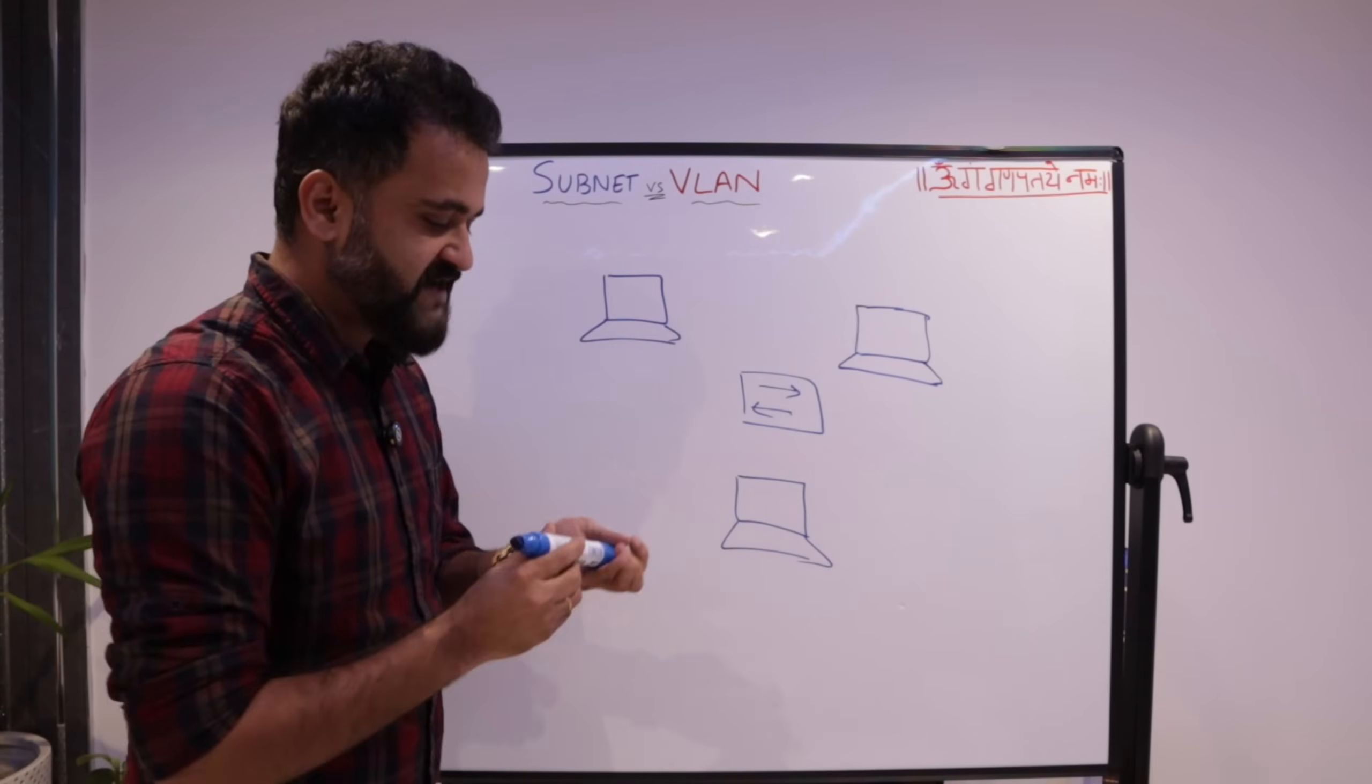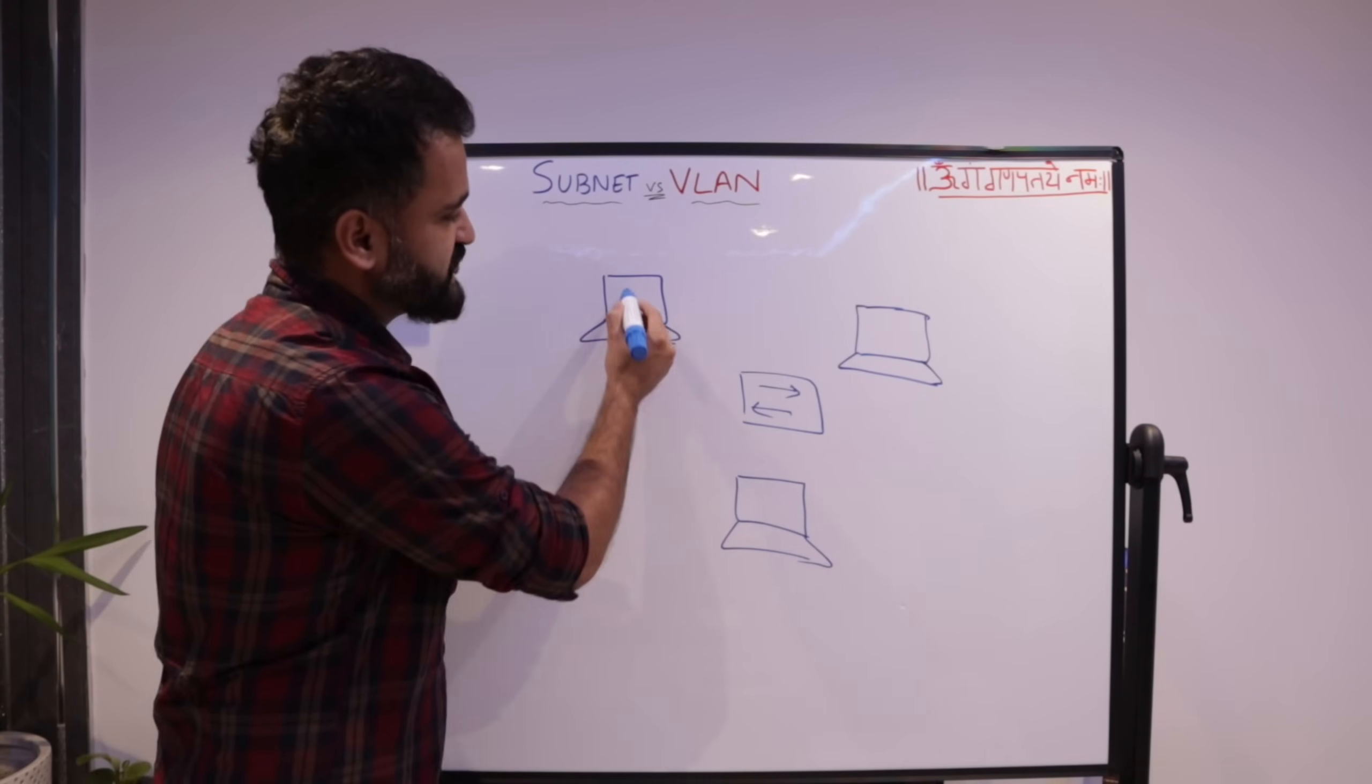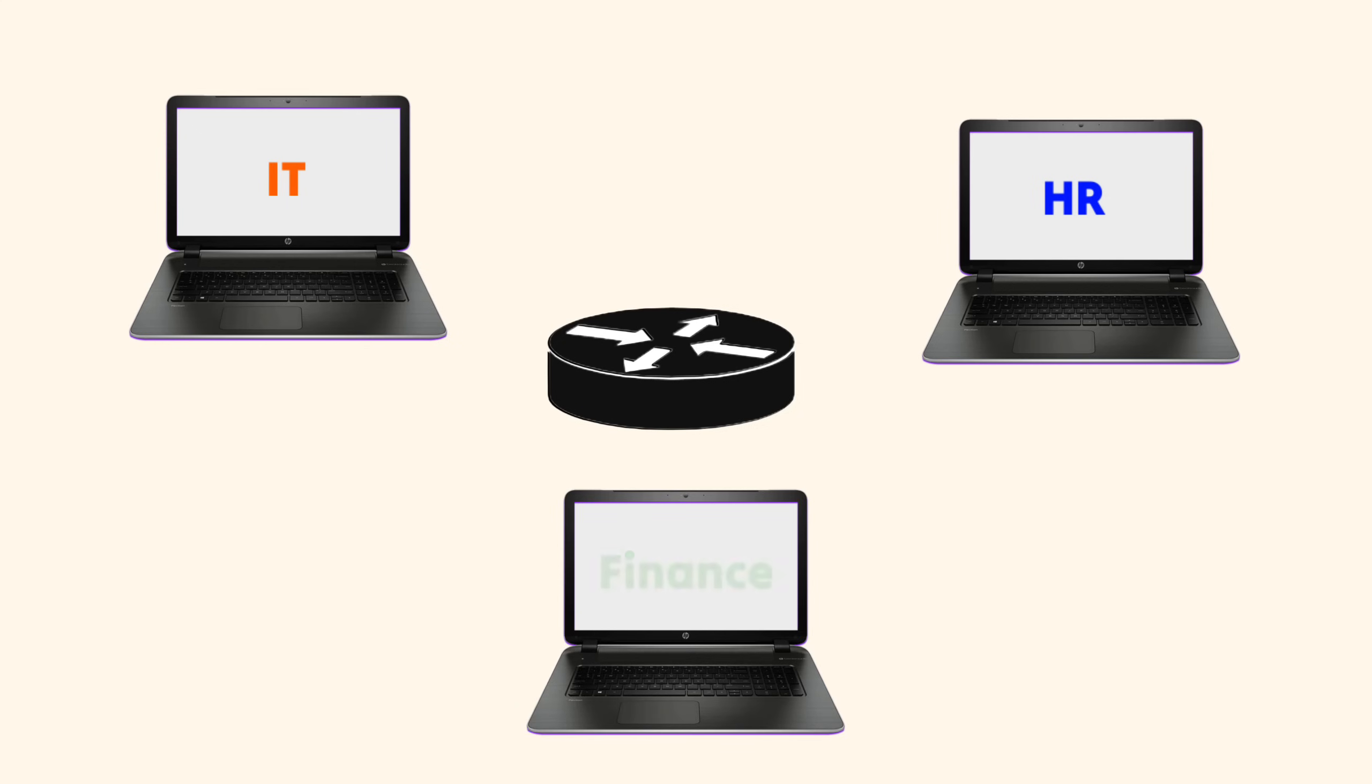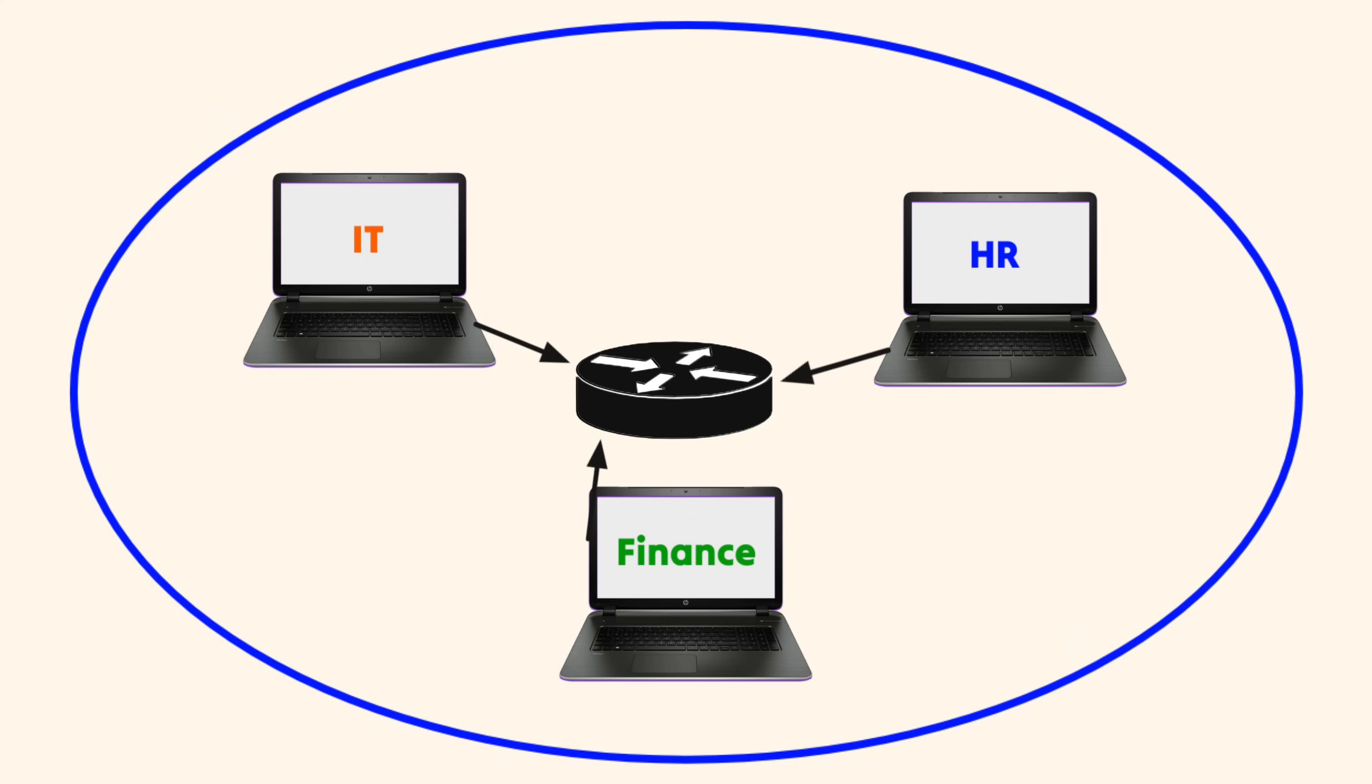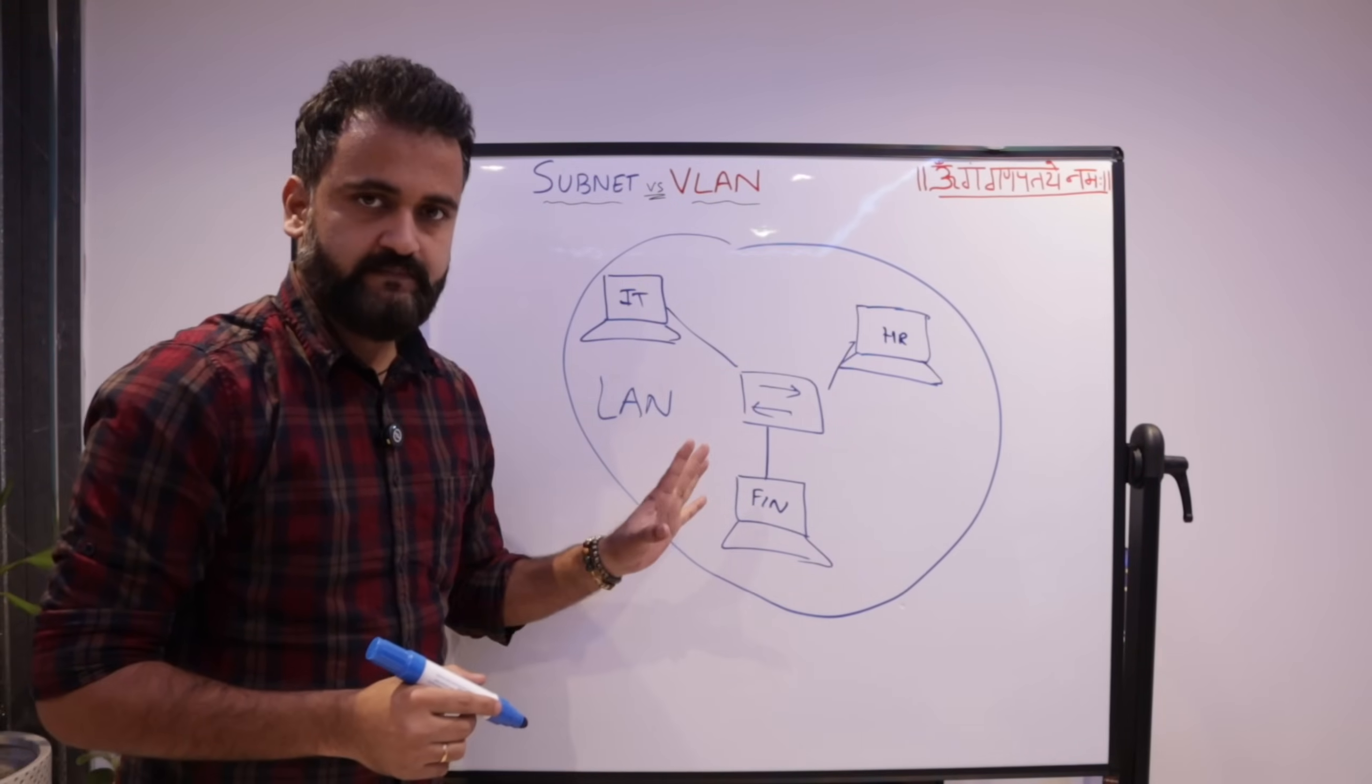So consider this: a startup opens a company with three people. And these three people are managing three different departments. So one is managing IT, second is managing HR, and the third one is managing finance. These three guys have opened a startup. And all three are connected to switch. And this particular network becomes your LAN. So this is your local area network.